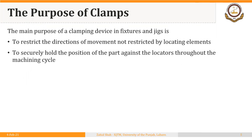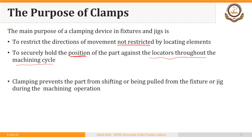The main purpose of a clamping device in fixtures and jigs is to restrict the directions of movement not restricted by locating. We discussed different methods of locating a part and performed activities where we saw how many degrees of freedom were restricted by a locating device. Clamps should also securely hold the position of the part against the locator throughout the machining cycle — restricting remaining degrees of freedom and holding the blank in the required position. In simple words, clamping prevents the part from shifting or being pulled from the fixture or jig during the machining operation.